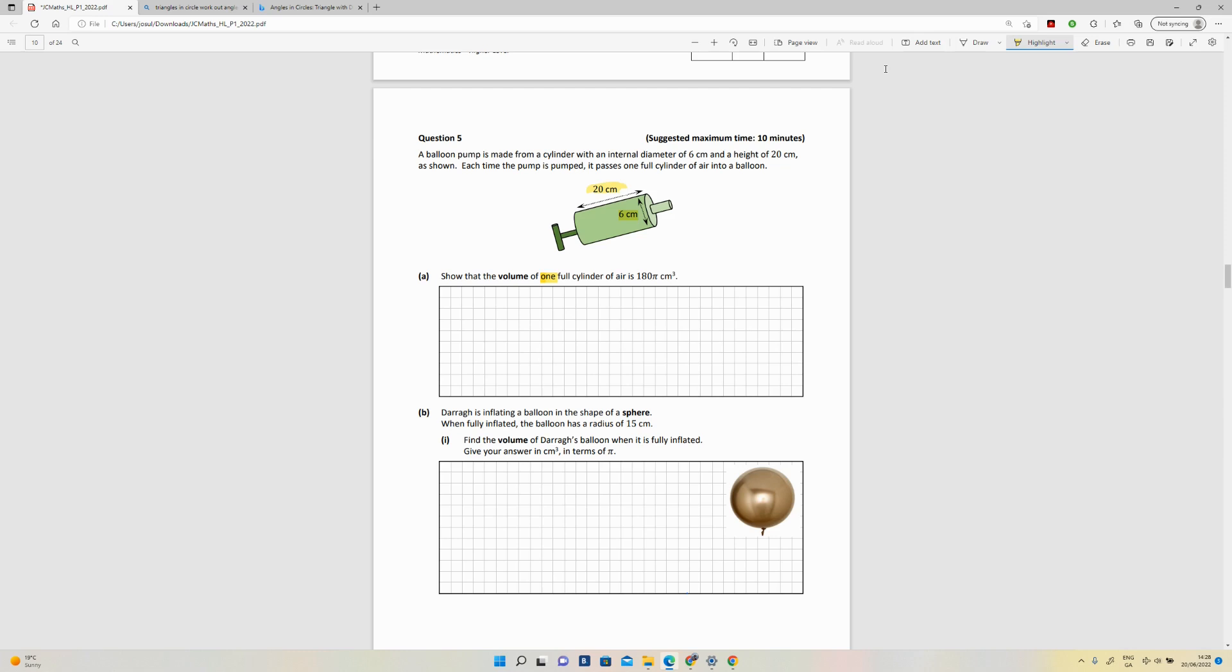So how do you show that? The volume of the cylinder can be got from the formula for a cylinder, which is in your log tables. That formula is πr² by the height. So what we have there then is π, we've got a diameter of...